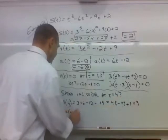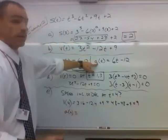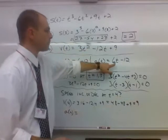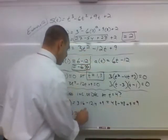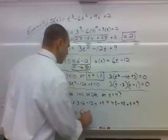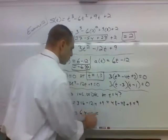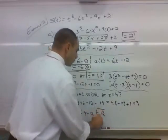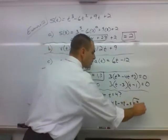Now let's look at our acceleration at 4. A of 4. Well, here's our acceleration function. We're going to plug in 4. So we have 6 times 4 minus 12. So that's 24 minus 12 or 12. So there's our acceleration. There's our velocity.